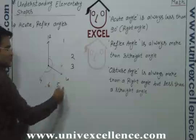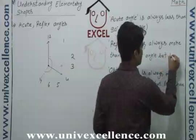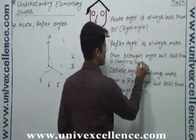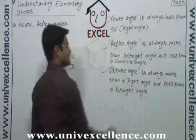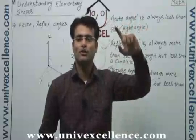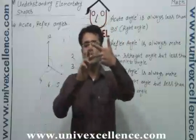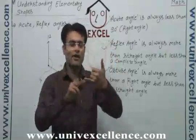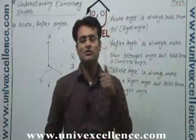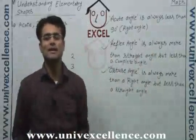More than a right angle but less than a straight angle — that is obtuse. And reflex angle is more than a straight angle but less than a complete angle. So we have three angles: acute, obtuse, and reflex. Completely, we have six types of angles — three standard ones: right, straight, and complete; then three more based on those: acute (less than 90°), obtuse (more than 90° but less than 180°), and reflex (more than straight but less than complete).